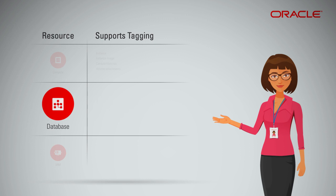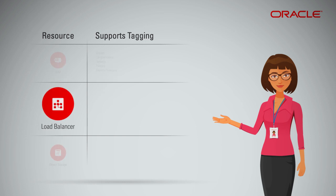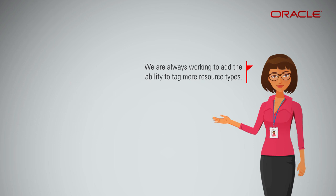Under the database service, DB systems and databases support tagging. Under the IAM service, groups, compartments, tenancy, policies, and identity providers support tagging. Under the load balancing service, load balancers support tagging. Under the object storage service, buckets support tagging. We are always working to add the ability to tag more resource types.